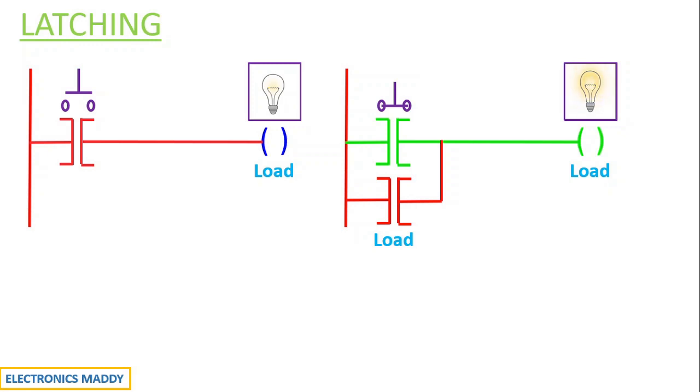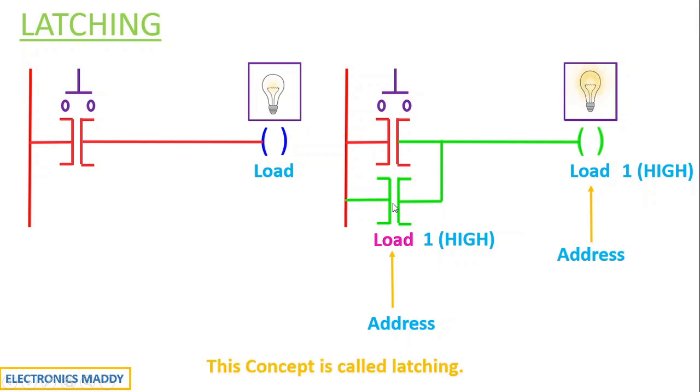What happens internally is since the address corresponding to the load becomes equal to one - that is high because the light is glowing - the same address is used here as well, so this contact also gets energized. Now if I release the push button switch, even if this contact becomes equal to open circuit, the current will still be flowing through this path. This concept is called latching.